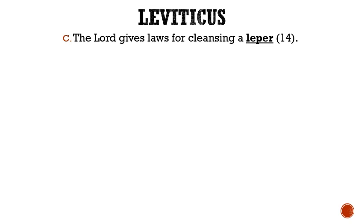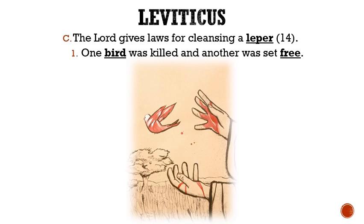Letter C: The Lord gives laws for cleansing a leper. First, one bird was to be killed and another was to be set free. If the leprosy of an individual was healed, then he was to bring two live birds, kill one of them, and then the priest would use the live bird to dip in the blood of the dead bird and sprinkle the blood on the healed leper. After this, the bird could then be set free.